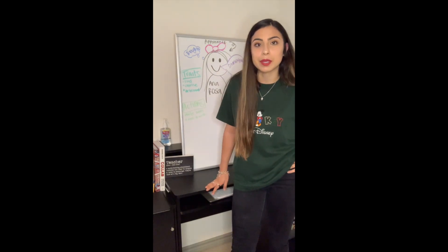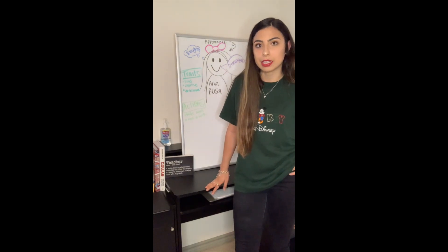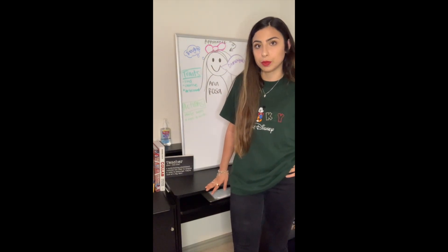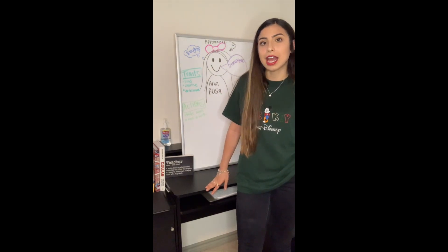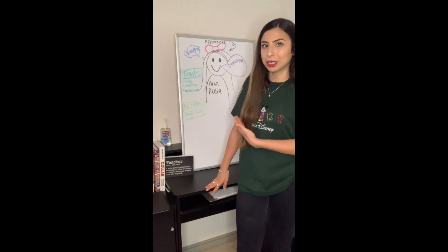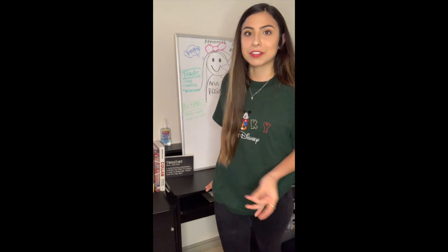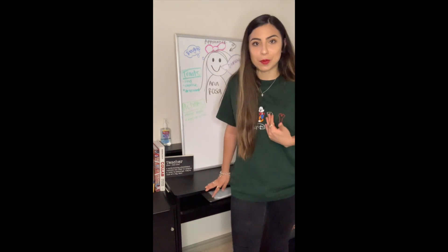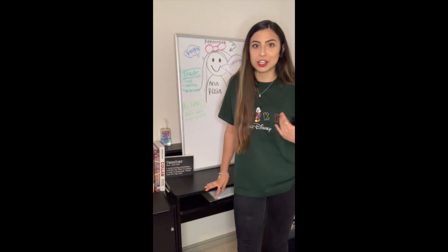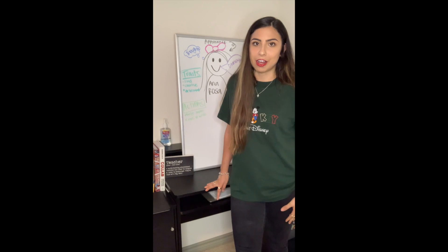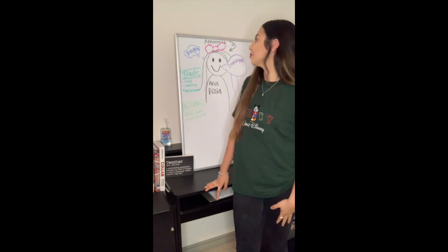So the first word we're going to talk about is appearance. Appearance is the way something or the way someone looks. Now, I know I drew a bow on Anna Rosa and the author did not specifically say that she had a bow. But if you're one of my students, then you know I constantly do this when I draw female characters.